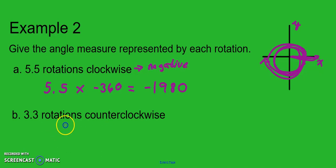All right, so then that means if we're going to go 3.3 rotations counterclockwise, that means that we're going backwards here, starting here and going around. So that means we're going to have a positive answer here. Positive. So that means we're going to multiply 3.3 times 360, a positive 360, because we're going counterclockwise.